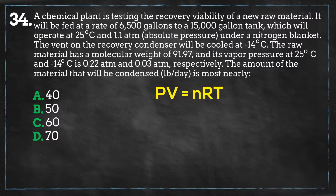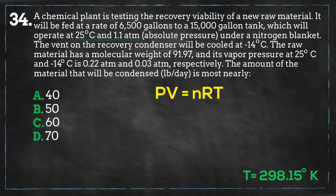Whenever you are dealing with air concentrations of components at various temperatures, you can manipulate the ideal gas equation, rearranging it to solve for volume per mole at the tank's current conditions. The tank operates at 25 degrees Celsius, which is equal to 298.15 degrees Kelvin, and the pressure is 1.1 atmospheres.